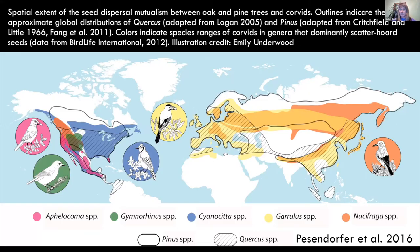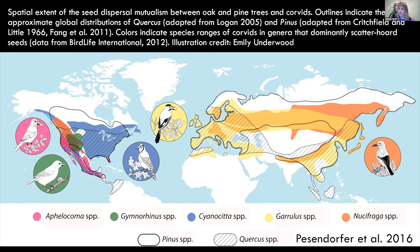This diagram shows the overlap between pines and oak species worldwide. In pink we have scrub jays, green is pinyon jays, we have the eastern blue jay, Eurasian jays in yellow, and nutcracker species in orange. In the north there are a lot of pines that overlap with jays or nutcrackers, and across the middle latitudes, oaks overlap with jays and magpies. Just by looking at their distributions, it appears there are important relationships between these species that have led to these patterns.